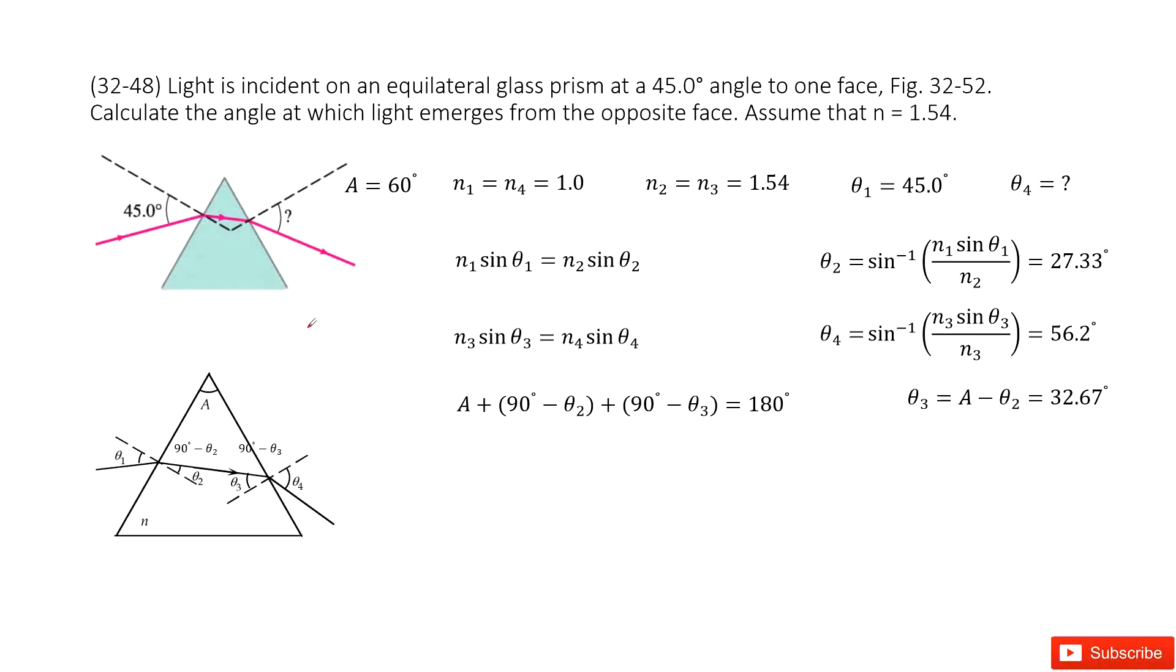Now we look at this system. We have light incident on an equilateral glass prism. This is a very important keyword. They tell us the angle for this triangle is 60 degrees, right? So we write it here.